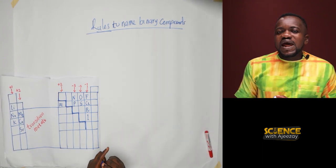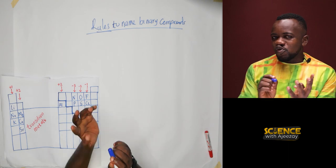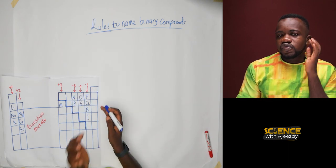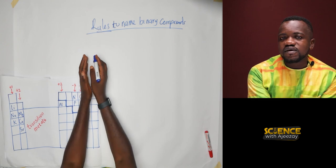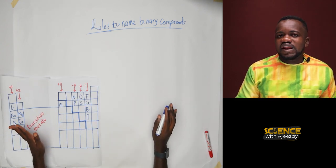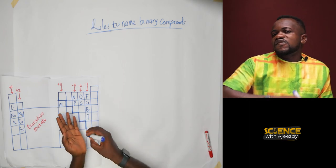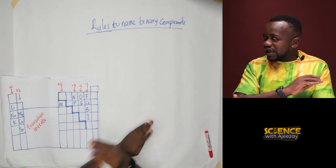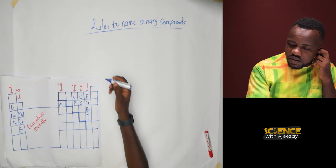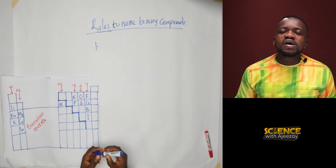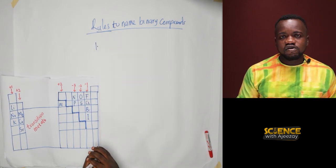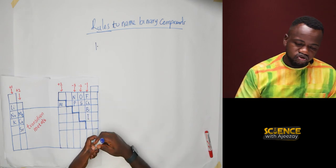Because binary compounds are made up of two elemental atoms coming together, the first element is always a metal — that's a cation with a positive charge. The second one is a non-metal. When you are naming the compound, you maintain the name of the first element, the metal.